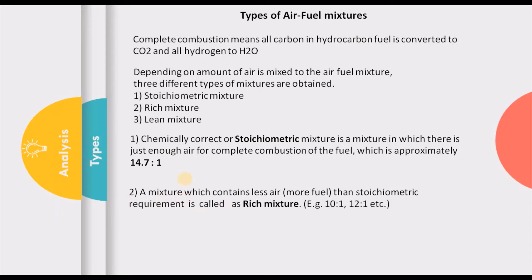Now, classifying the mixture on the basis of amount of fuel supplied: a rich mixture means more fuel is supplied. A mixture which has more fuel, or in other words less air than the stoichiometric requirement, is called a rich mixture. For example, 10:1 means 10 units of air for one unit of fuel, whereas stoichiometric was 14.7:1. Obviously, the amount of air supplied is less, meaning we are supplying more fuel than stoichiometric. So 10:1 or 12:1 are examples of rich mixture.